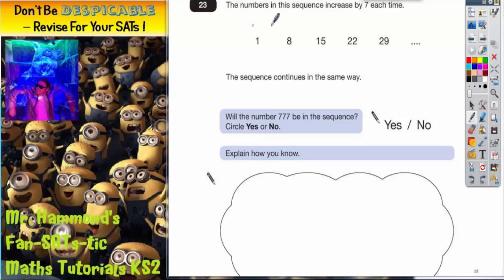Question 23. The numbers in this sequence increase by 7 each time: 1, 8, 15, 22, 29. They're going up by 7s.